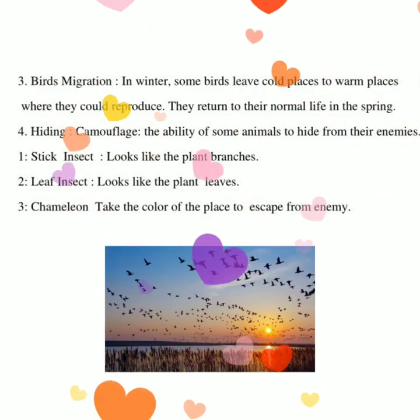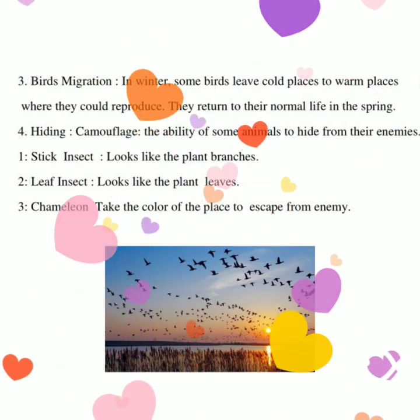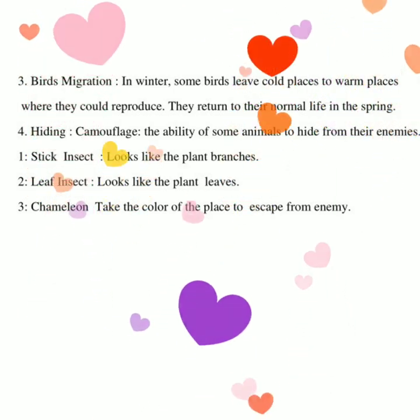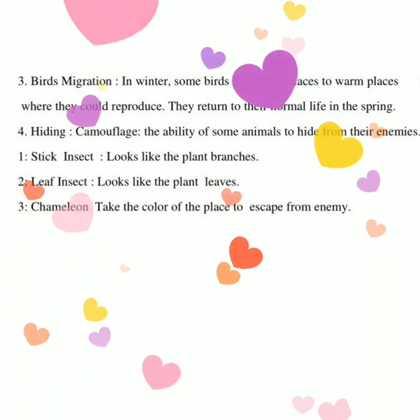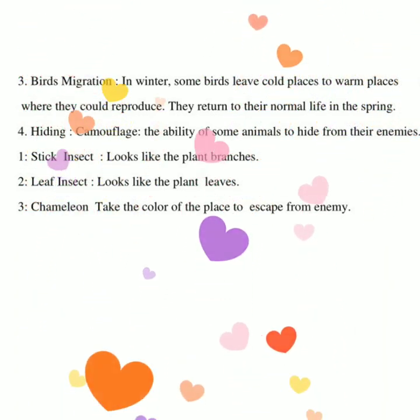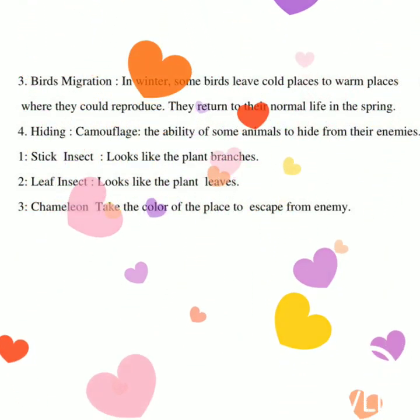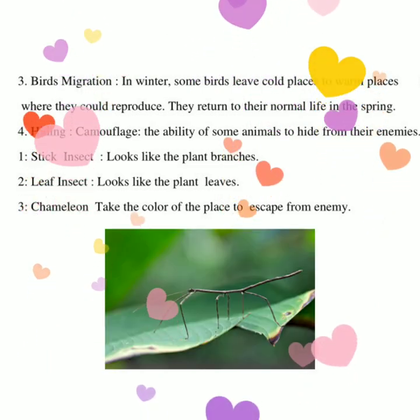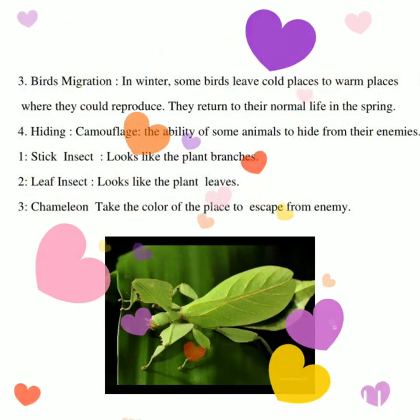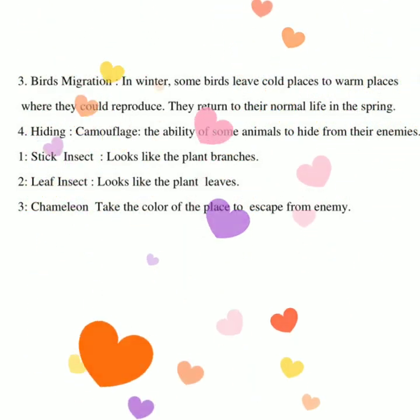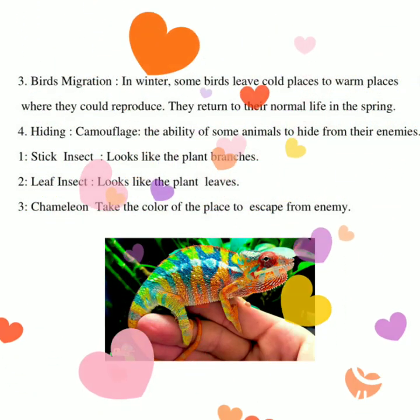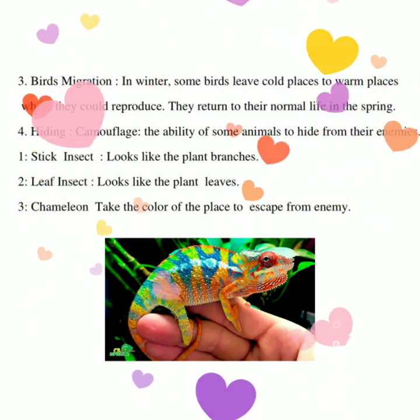Migration: in winter, some birds leave cold places to fly to warm places where they can reproduce, and return in spring — for example, the quail. Camouflage is the ability of some animals to hide from enemies or capture prey. Examples: stick insects look like plant branches, leaf insects look like plant leaves in color and shape, and the chameleon takes on the color of its surrounding environment.